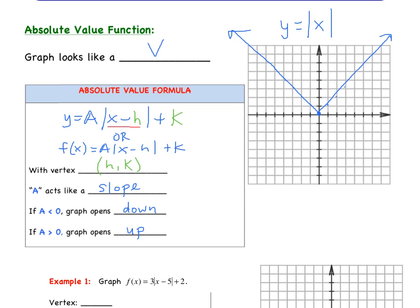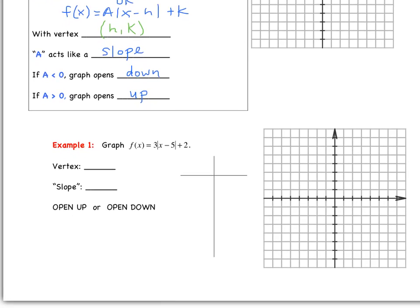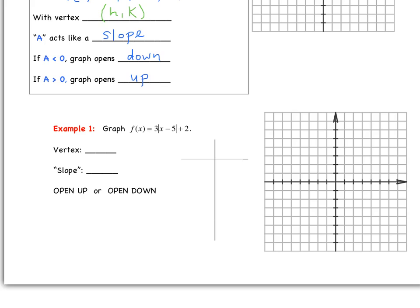Let's try our first example: graph F of X equals 3 times the absolute value of X minus 5, plus 2. The first thing we do is identify the vertex. Looking inside, we take the opposite, so H equals 5. On the outside we have positive 2, so K equals 2. Our A value is 3, and since 3 is greater than 0, the graph opens up.